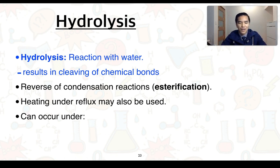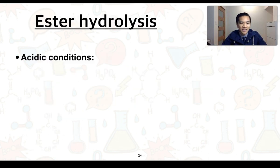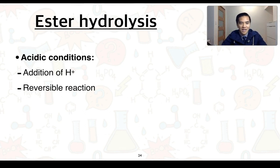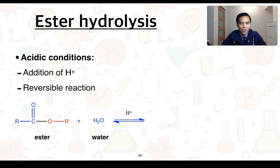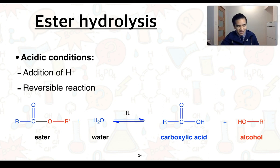As mentioned in the science understanding, hydrolysis can occur under acidic conditions as well as alkaline conditions. Starting with acidic conditions: this means the addition of H⁺, or the presence of an acid. This is a reversible equilibrium reaction. We have our ester with water in the presence of an acid. This bond here in black is going to break, forming our carboxylic acid — shown in blue — as well as our alcohol. This is just the reverse of a condensation reaction.